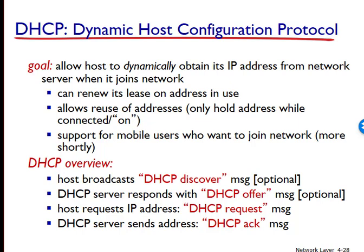DHCP allows a host to be allocated an IP address automatically. A network administrator can configure DHCP so that a given host receives the same IP address each time it connects to the network, or a host may be assigned a temporary IP address that will be different each time the host connects to the network. In addition to host IP address assignment, DHCP also allows a host to learn additional information, such as its subnet mask, the address of its first hop router — often called the default gateway — and the address of its local DNS server.